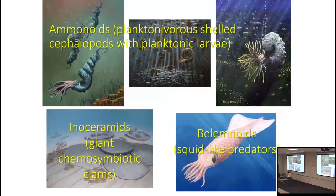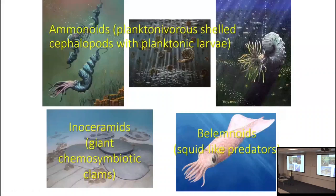Inoceramids were giant clams — actually closer to scallops — that appear to have been chemo-symbiotic, hosting bacteria in their gills that absorbed chemicals from the water. A single shell could be as large as a person is tall. They had pearls, but low-grade ones. Belemnoids are cousins of ammonoids, close to the ancestry of cuttlefish, squid, and octopods, and they were major prey for many marine reptiles. Both groups die out at the KPg boundary.